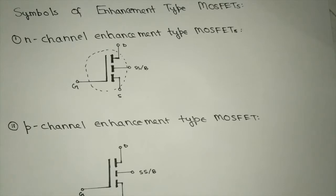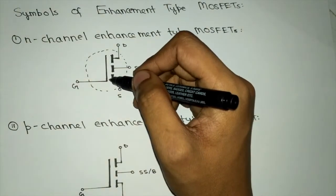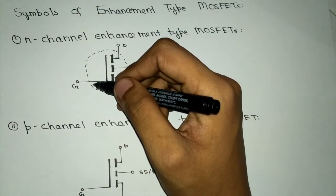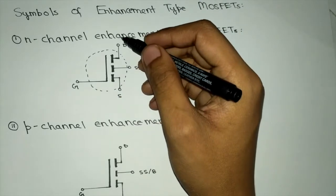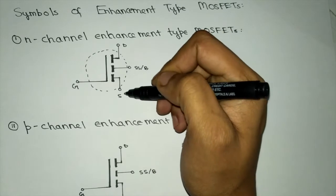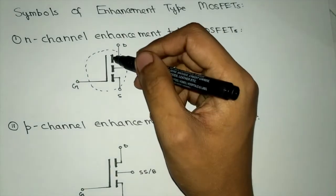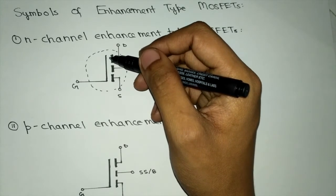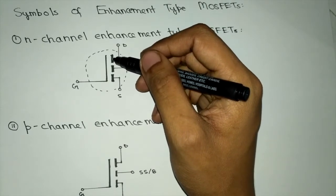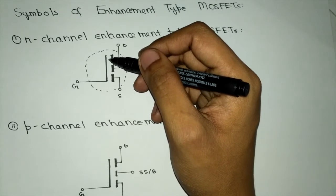In MOSFET, it consists of one straight line that is connected to the gate and there are three other terminals connected to the drain, the substrate, and the source respectively. They are not connected initially because in enhancement type MOSFET the N channel does not exist initially from the beginning.